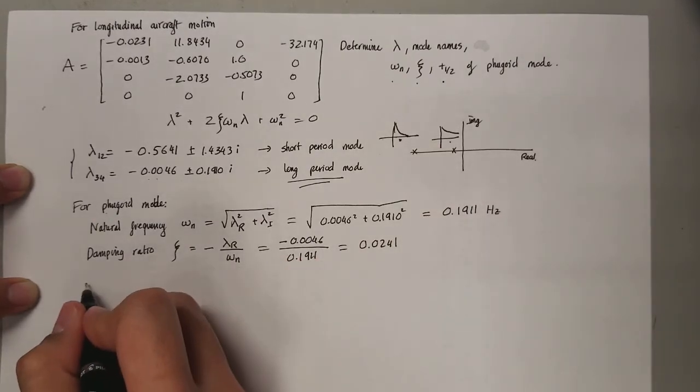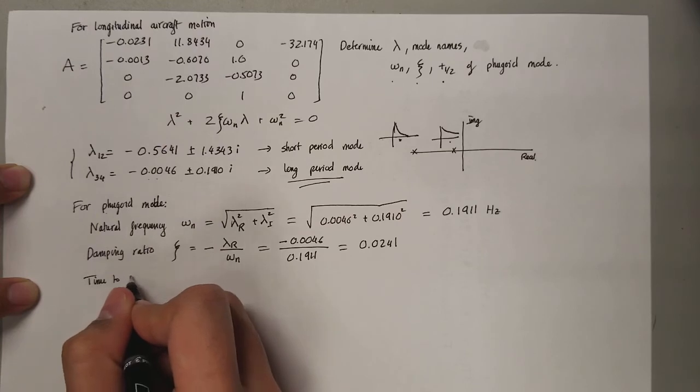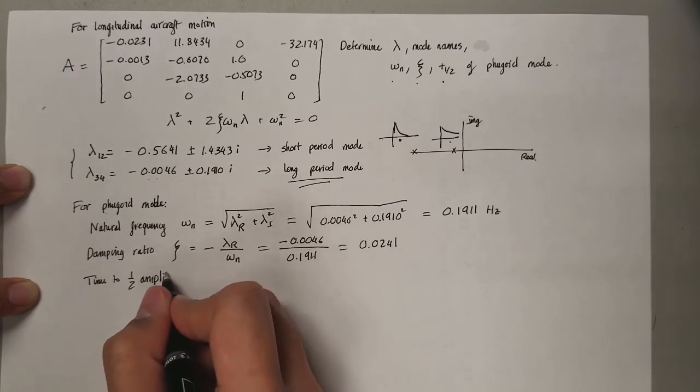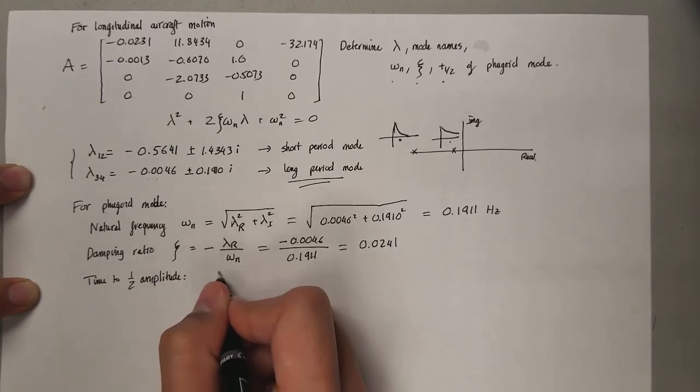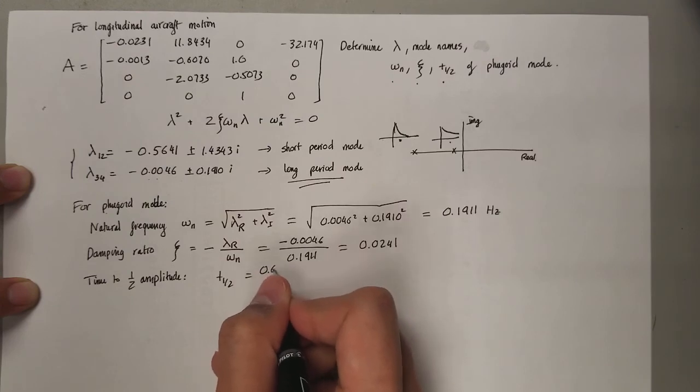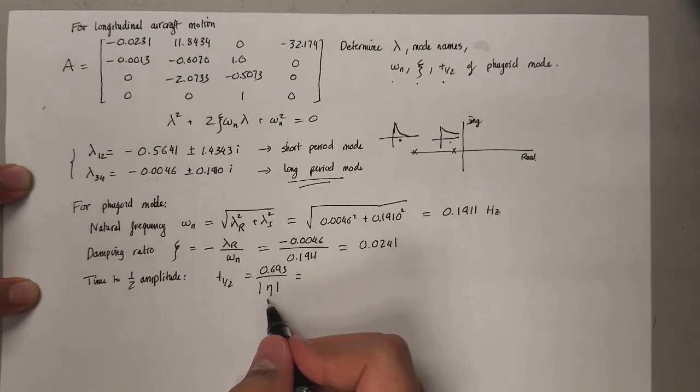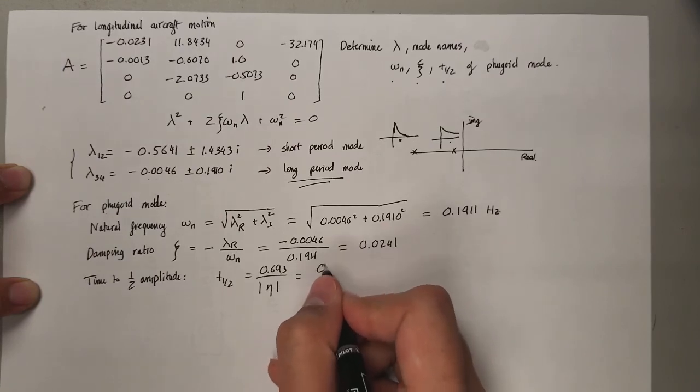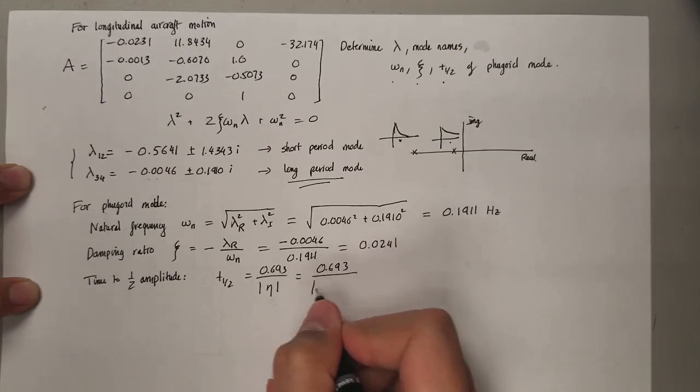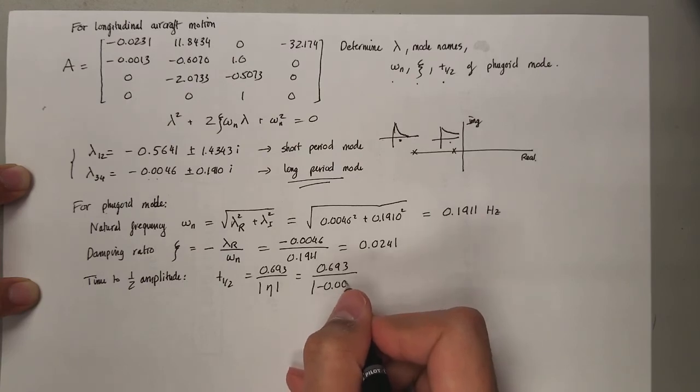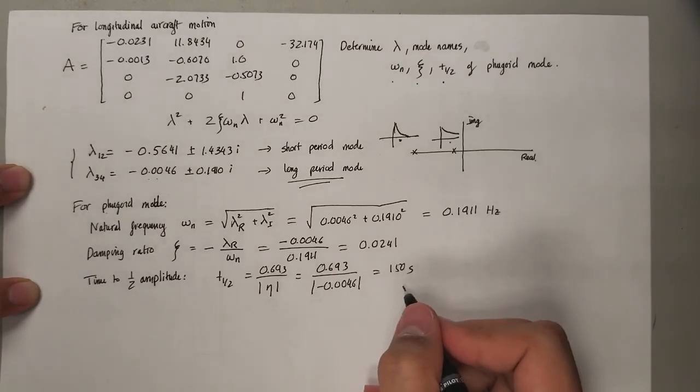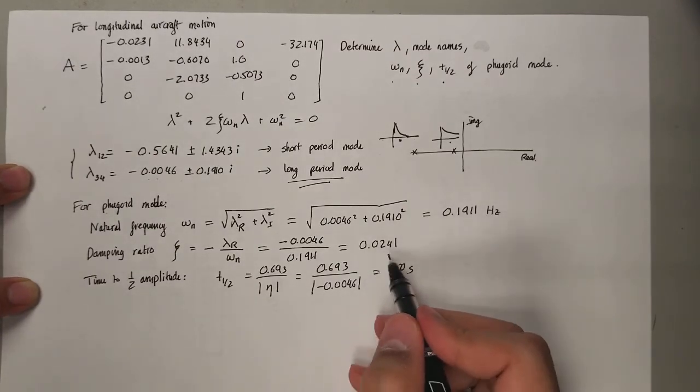Time to half amplitude, that's going to be 0.693 divided by the formula you learned during the class. This is the real component of the eigenvalue, so it's going to be 0.0693 divided by the absolute value of negative 0.0046. That's going to turn out to be approximately 152 seconds.